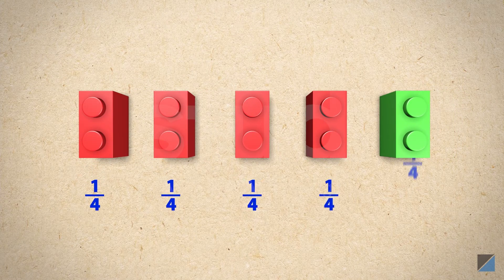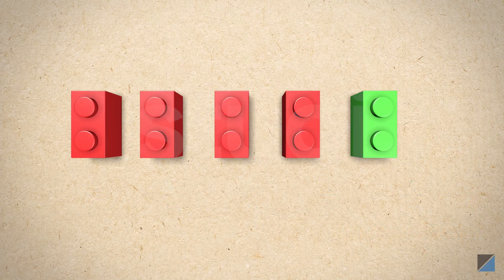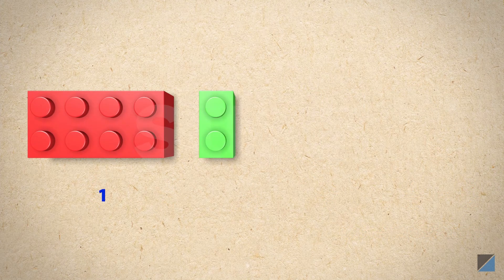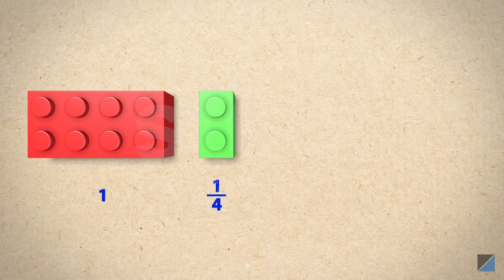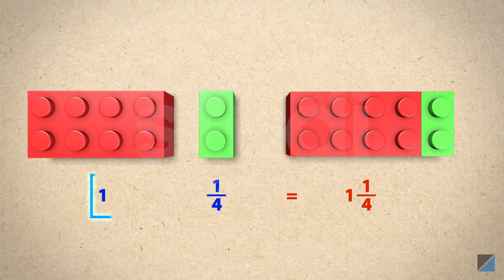Better to write this as one whole block and one fourth block. One and one fourth is called a mixed number because it is a mix of a whole number and a fraction. Mixed numbers are a sensible way of writing improper fractions.